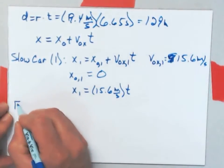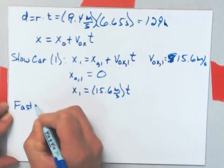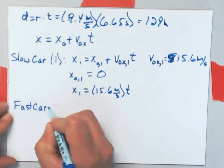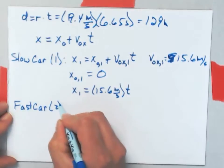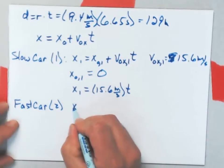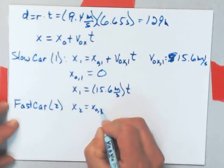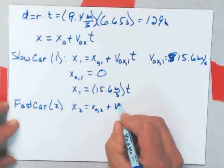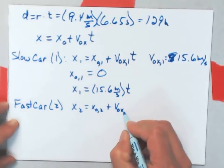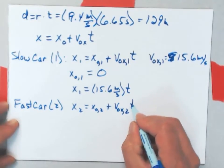For the fast car, call this car 2. I would just have x2 is x naught for car 2 plus v naught x for car 2 times t.